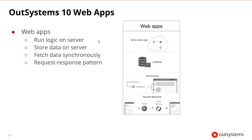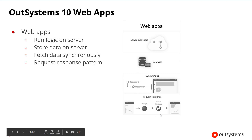Previous versions of OutSystems allowed us to build web applications, and those web applications had different types of screens that can make synchronous calls to server-side logic. Those could access different types of data, and we could update the screen with AJAX to reduce the amount of information being sent back and forth.